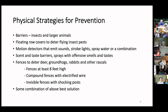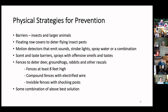Now for physical strategies for prevention. One good physical strategy is barriers, including several different types — for insects and larger animals as well. Floating row covers are really effective in deterring flying insect pests if you make sure they are solidly connected to the ground — with rocks or something to keep them down — because if they blow up and insects get under them, they're not effective.